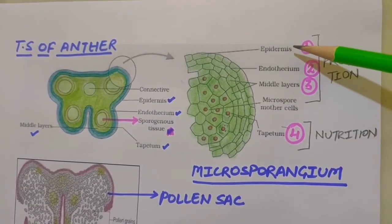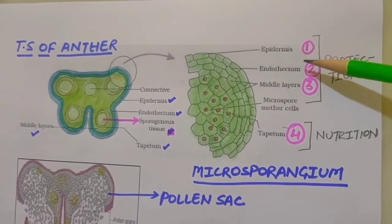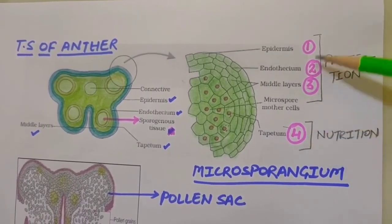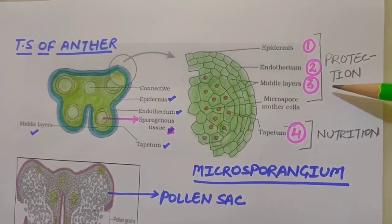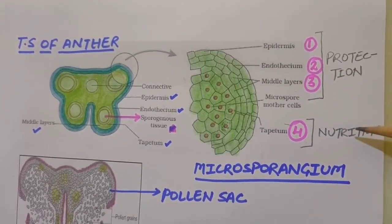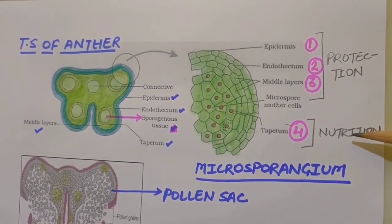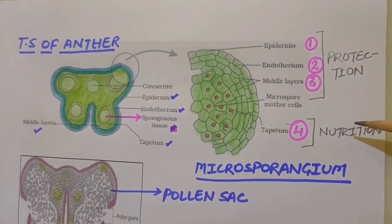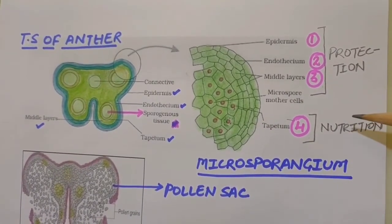The microsporangium is surrounded by four wall layers: epidermis, endothecium, middle layers and tapetum. The outer wall layers perform the function of protection and help in dehiscence of the anther to release the pollen. The innermost wall layer is called tapetum, and it nourishes the developing pollen grains.